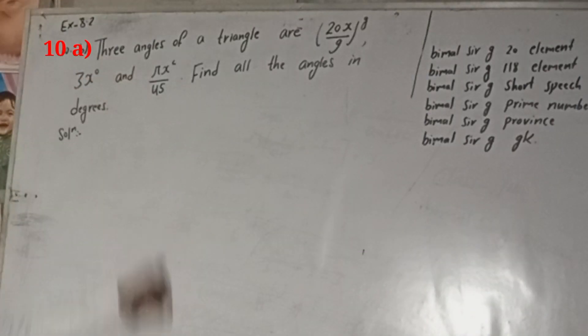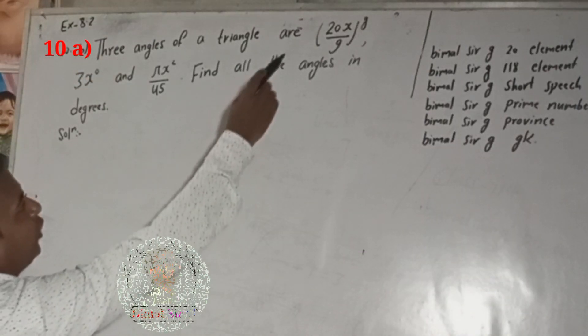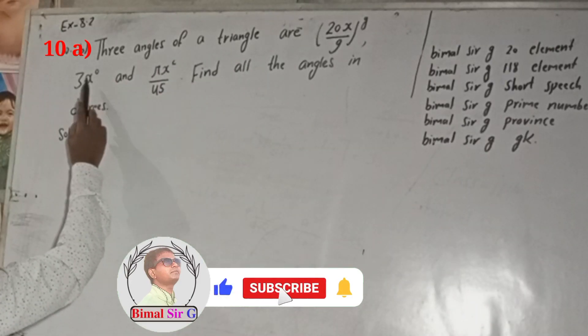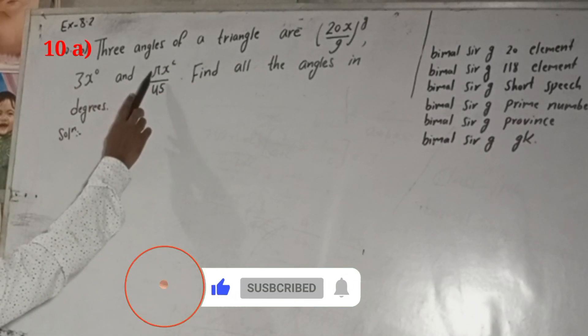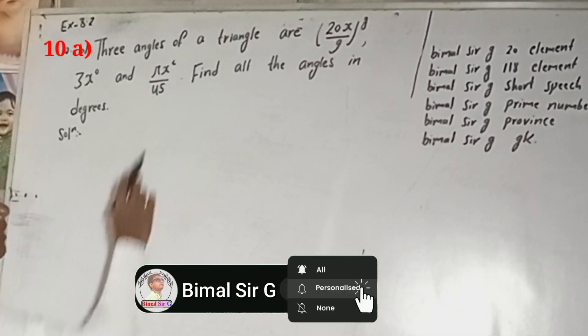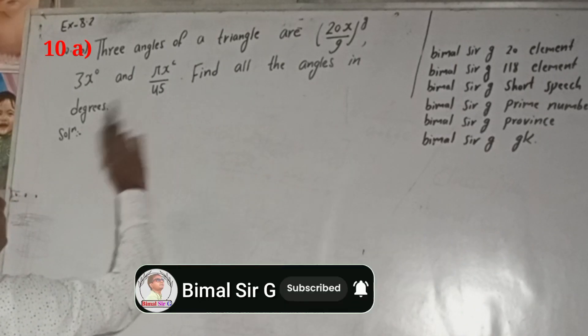Three angles of a triangle are 20x/9 grade, 3x degree, and πx/45 radian. Find all the angles in degree.